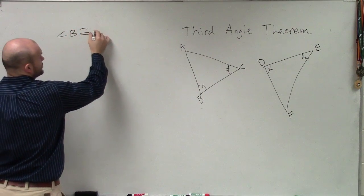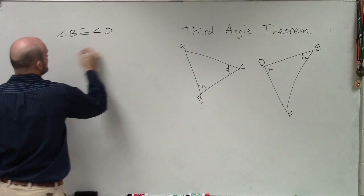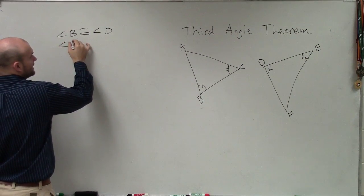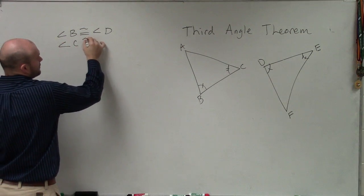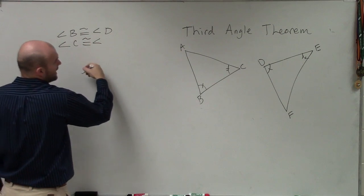Angle B is congruent to angle D, and angle C is congruent to angle E.